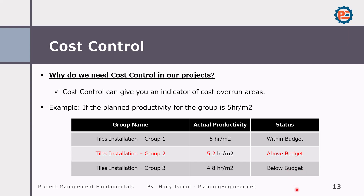If I'm a project manager and I need to terminate one of these three groups, I should definitely terminate group two because they are spending more hours than expected, making the company pay more money than required. On the other hand, if I want to give a reward or bonus, it goes to group three because they are saving hours for the company. In my experience in construction projects, we implemented a reward and punishment system based on productivity, publishing actual productivity rates every week or two so departments knew who was performing well and who needed to improve.